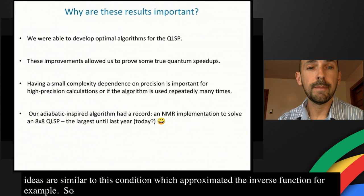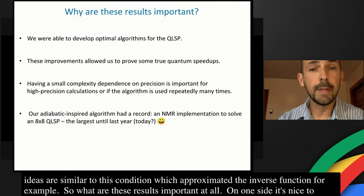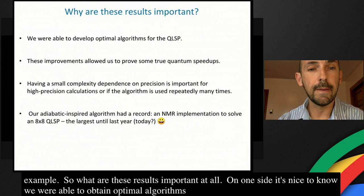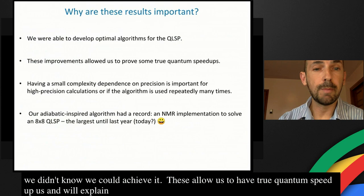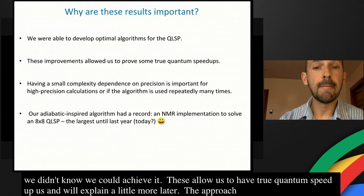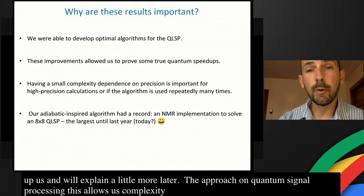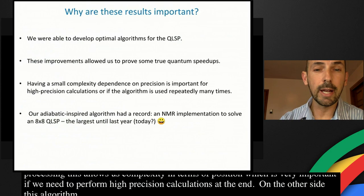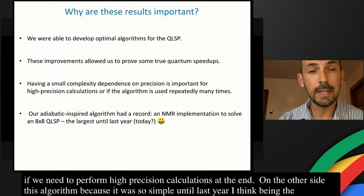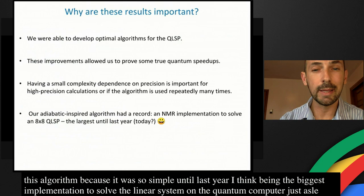Why are these results important? It's nice to know we achieved optimal algorithms for the quantum linear system problem — we knew the lower bound but didn't know whether we could achieve it. These improvements allow us to prove true quantum speedups. The approach based on linear combination of unitaries, or related quantum signal processing, reduces complexity in terms of precision, important for high-precision calculations. The adiabatic-inspired algorithm, being simple, held a record implementation — at least an eight-by-eight system — opening possibilities for larger problem sizes.